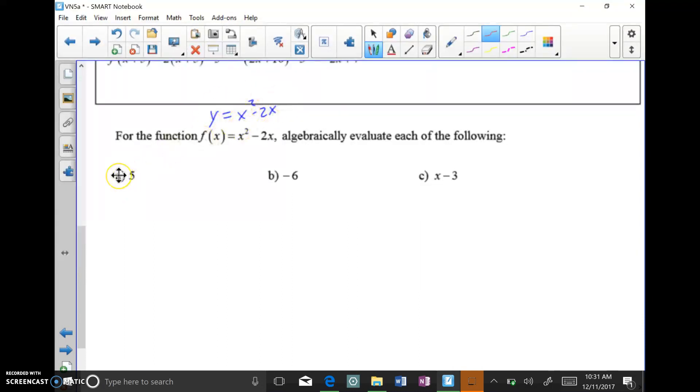So for the function f(x) equals x squared minus 2x, that just simply means y equals x squared minus 2x. If you want to type into your calculator and look up some things that way, you certainly can. When I want to plug in a 5, that means I want to look in my table for the x value of 5 and see what y value goes with it. But here it says algebraically evaluate. So even if I did have my calculator, I still need to show all the algebra.